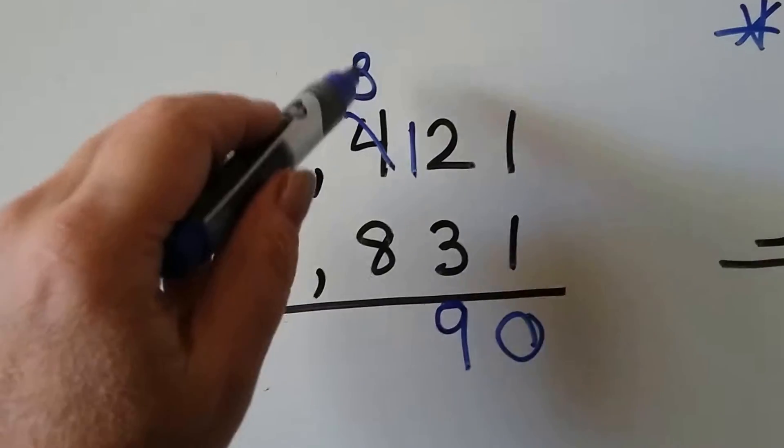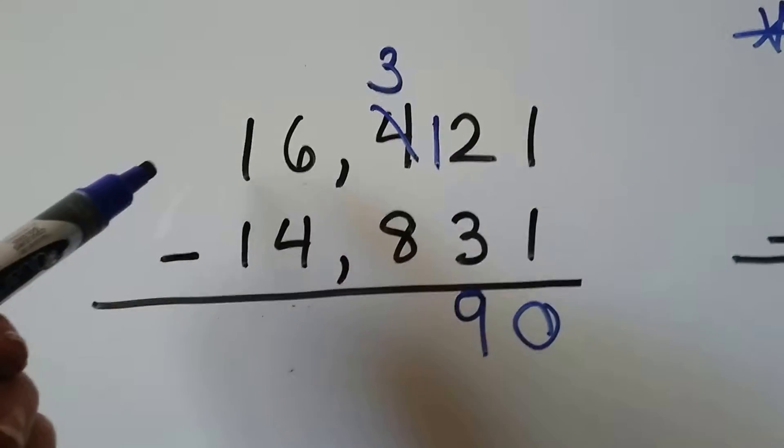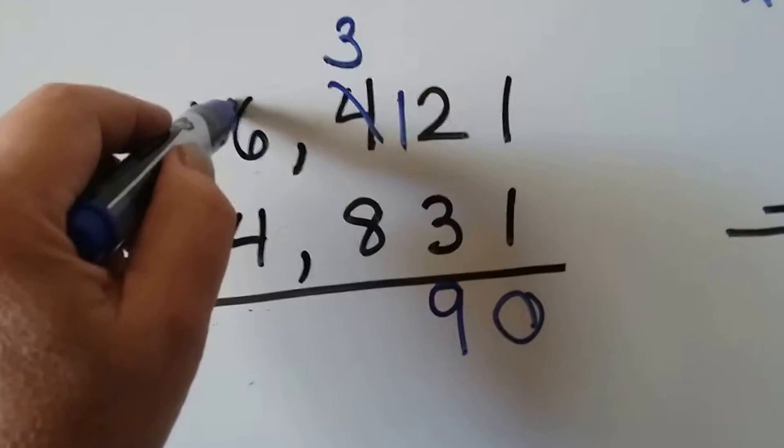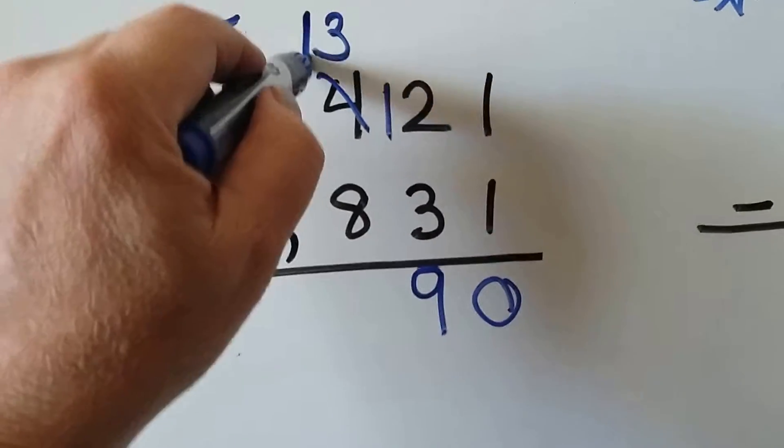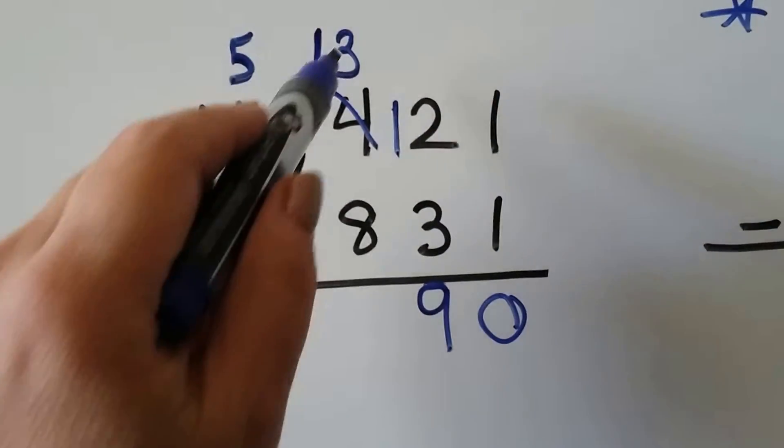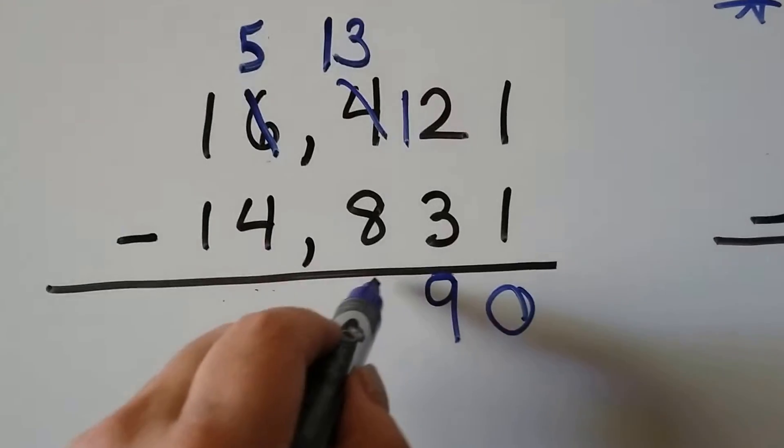But now we have 3 take away 8. So we have to borrow again. Hey, 6, can we have 1? Sure. He becomes a 5. And the 3 becomes a 13. Now we have 13 take away 8. Well, we can do that. That's a 5.